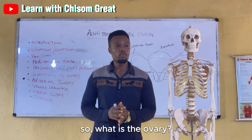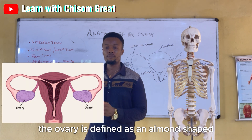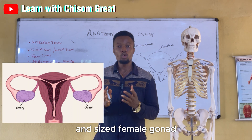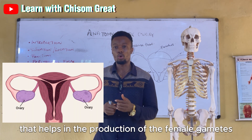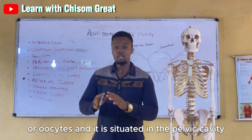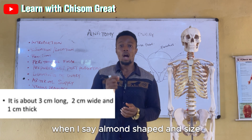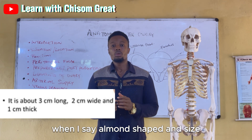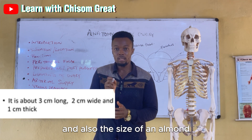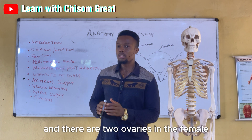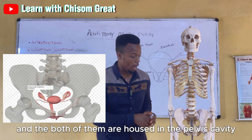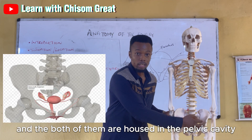The ovary is defined as an almond-shaped and sized female gonad that helps in the production of the female gametes or oocytes, and it is situated in the pelvic cavity. The ovary has the shape and size of an almond. There are two ovaries in the female — the right and the left — and both of them are housed in the pelvic cavity.